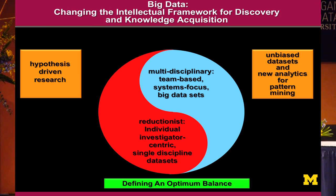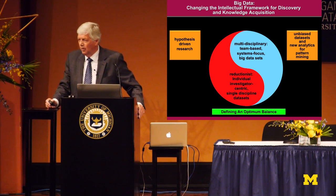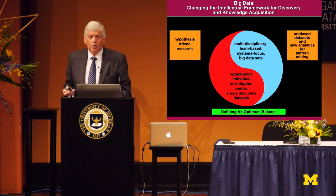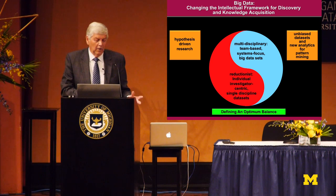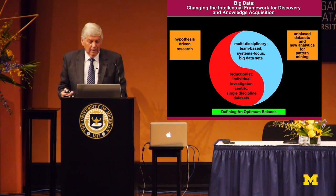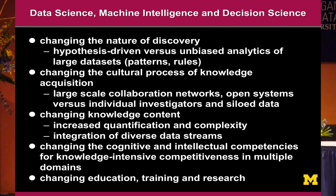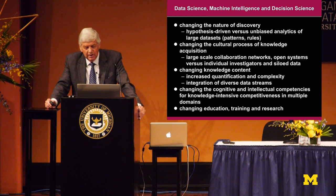In the academic environment there is this yin-yang: what is the optimum balance between hypothesis-driven research and unbiased data sets and new analytics? Sometimes this resembles monotheistic wars. The overall issue is that it has to be a balance, and that balance shifts from time to time and shifts discipline by discipline. Right now, at least in terms of molecular biology — which was fundamentally hypothesis-driven research — we've got to move much more towards the multidisciplinary team-based systems focus of big data sets. I would submit that data science, machine intelligence, and decision science will change the nature of discovery. Hypothesis-driven research versus unbiased analytics of large data sets will change the cultural process by which knowledge is generated, will change knowledge content, and will change the cognitive and intellectual competencies required to manage these data streams.